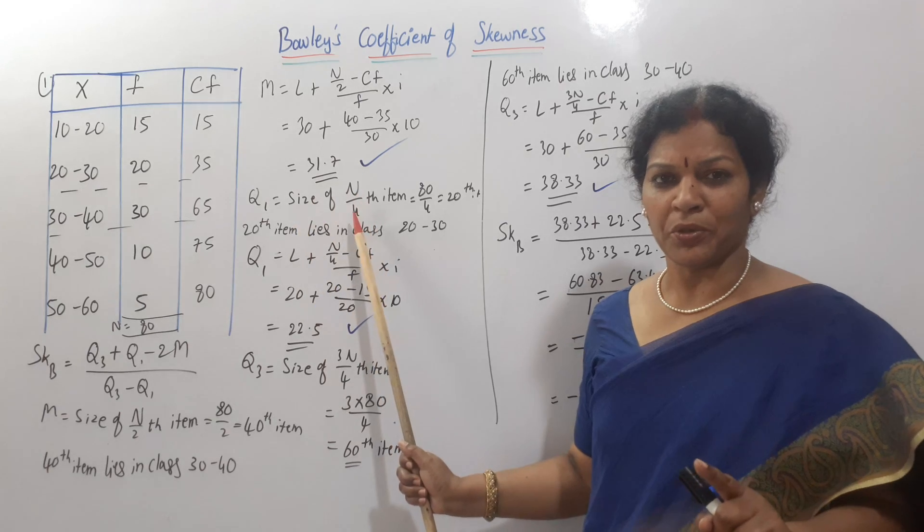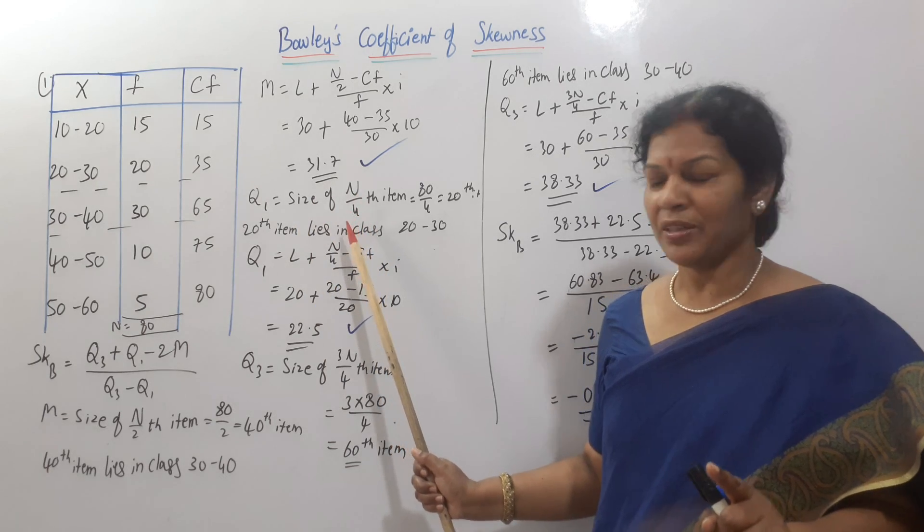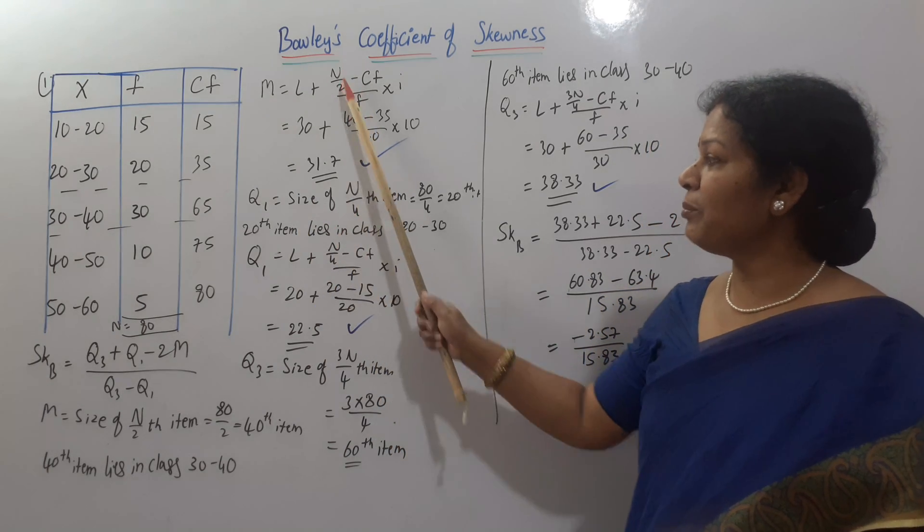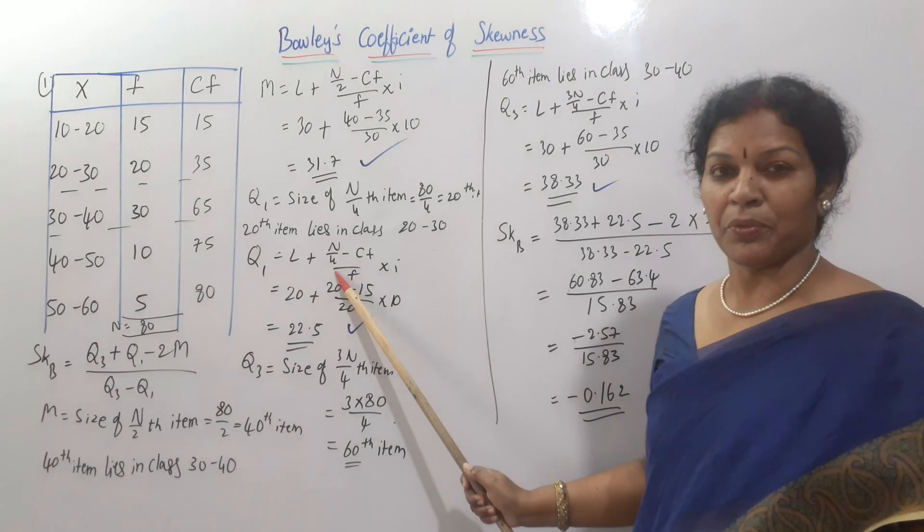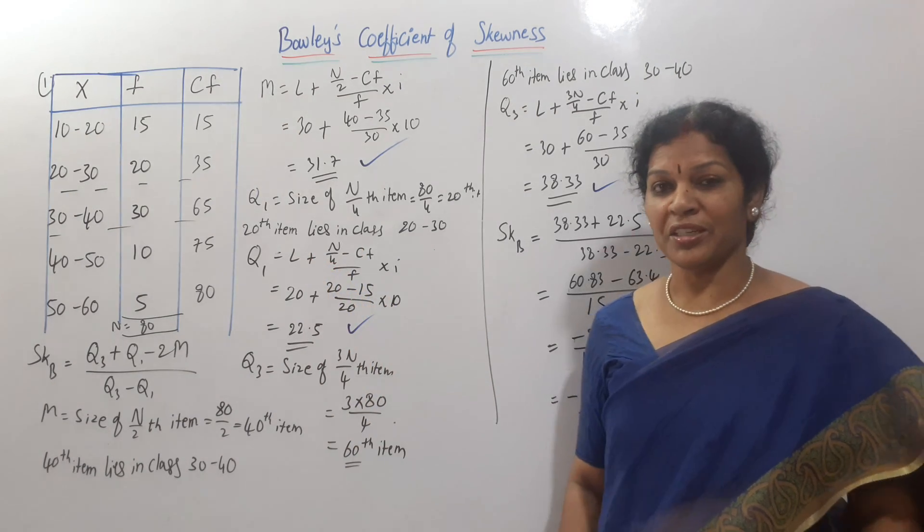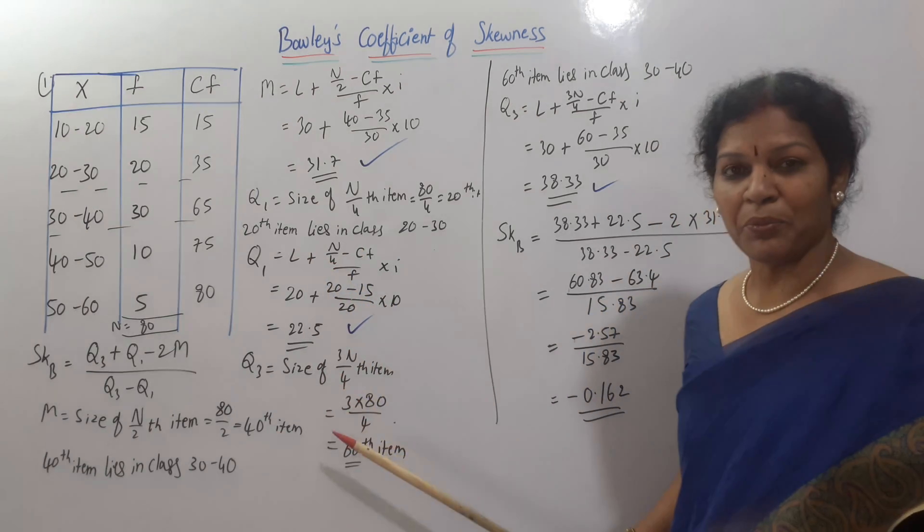In the same way, Q1. First formula is N by 4th item. Size of N by 4th item. Then second formula. Same one. Rather than N by 2, we are keeping here N by 4. That's all. And Q3. Size of 3N by 4th item.